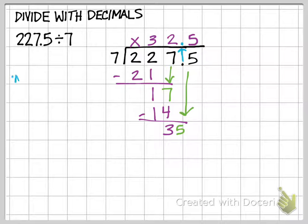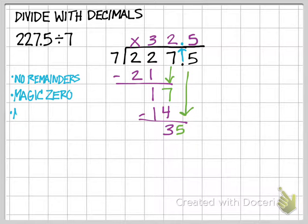Some pointers I'm going to write out: remember that you never have a remainder when you're dividing with decimals. Another thing to remember is that if, for instance, in this problem it came out evenly to where I didn't need to keep going, but if you did need to keep going, you can add what's called a magic zero. You could put a zero up here, for example, and then bring it down and keep going until you get an answer.